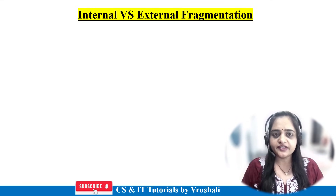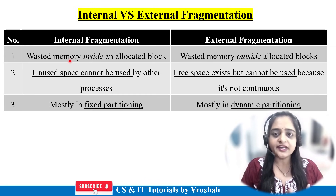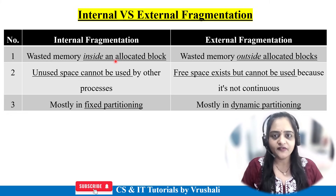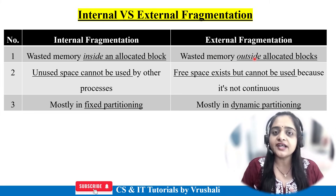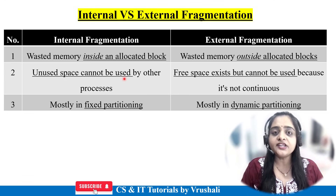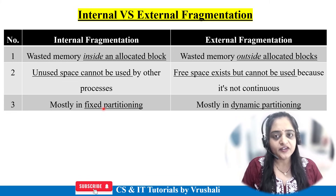Let's take a quick revision on the difference between internal versus external fragmentation. Internal fragmentation means wastage of memory occurs inside the allocated block — for example, with a fixed size partition of 4MB, a process uses only 3MB, so 1MB inside the block is wasted. External fragmentation means wastage of memory is outside the allocated block — wasted memory is scattered everywhere. In internal fragmentation, unused space cannot be used by other processes. In external fragmentation, free spaces exist but cannot be used by processes that require continuous memory. Internal fragmentation mostly occurs in fixed partitioning; external fragmentation mostly occurs in dynamic partitioning.